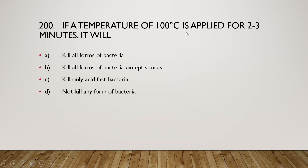The last question: if a temperature of 100°C is applied for two to three minutes, it will kill all forms of bacteria, kill all forms of bacteria except spores, kill only acid-fast bacteria, or not kill any form of bacteria? The right answer is option B — 100°C for 2 to 3 minutes will kill all forms of bacteria except spores. Thank you for watching this video.